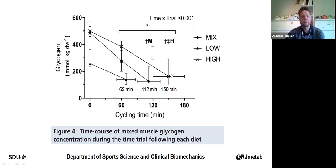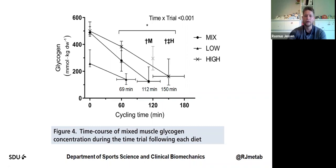One question immediately emerges: why could subjects exercise for longer on the high diet compared to the mixed diet when the initial total glycogen level was the same? The answer is likely the distribution of glycogen — the subcellular localization — and I will come back to that in a minute.